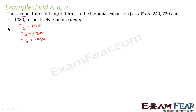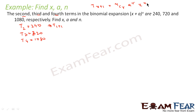The whole term is equal to these values. We know the formula: t(r+1) = nCr · a^r · x^(n−r). So t2 = t(1+1) gives us nC1 · a · x^(n−1) = 240. This is our first equation.